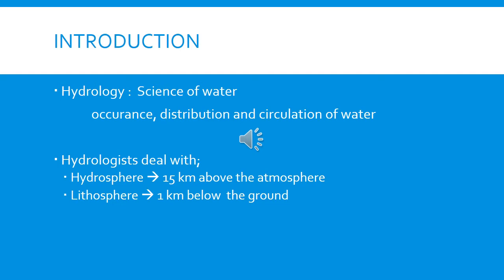The circulation includes evaporation going back to the atmosphere and returning as precipitation again. Hydrologists deal with the hydrosphere and lithosphere: the hydrosphere is 15 kilometers above the ground into the atmosphere, and the lithosphere extends one kilometer below the ground. So as hydrologists, we deal with a 16-kilometer range covering all global water circulation.